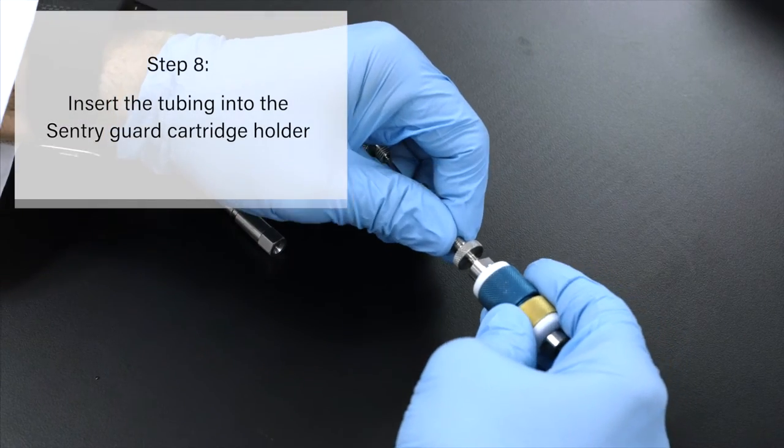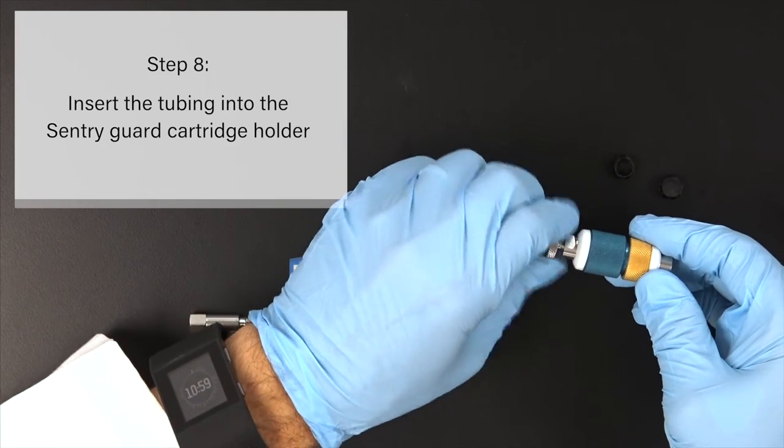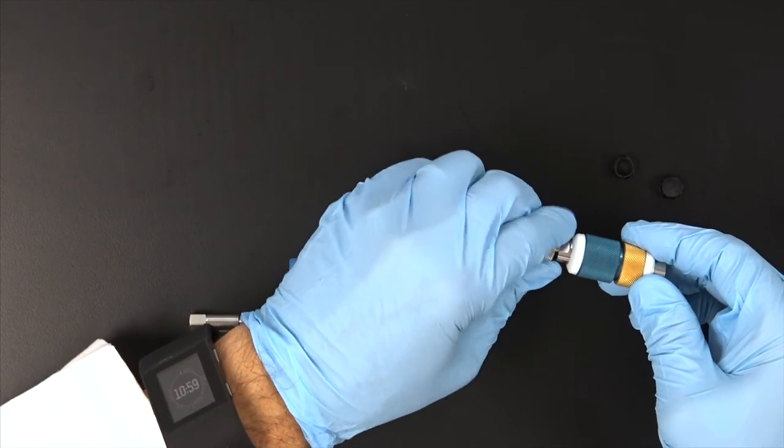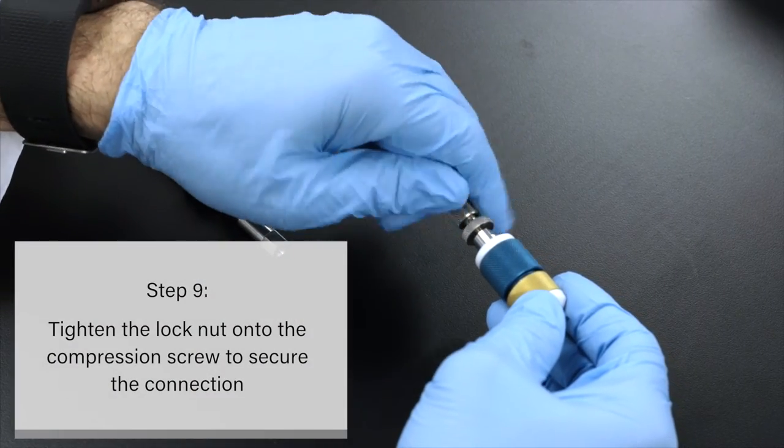Firmly insert the tubing into the Sentry Guard Cartridge Holder while tightening the compression screw until it is finger tight. Tighten the lock nut onto the compression screw to secure the connection.